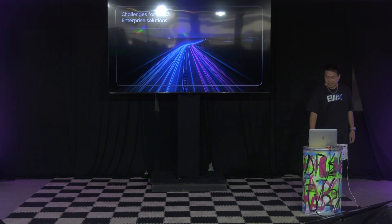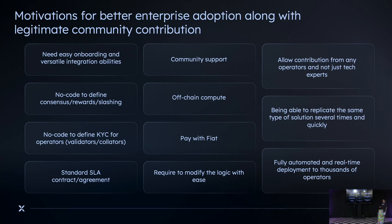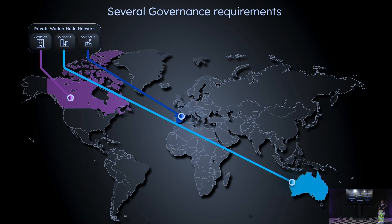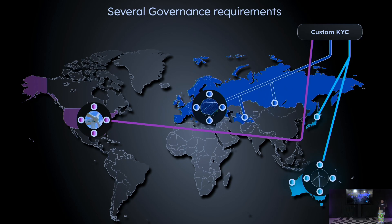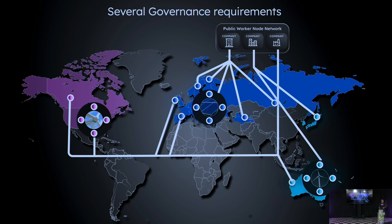Having engaged with enterprises that are familiar and more comfortable with legacy and well-established software solutions, we have identified the challenges for enterprise Web 3.0 solutions adoption. These challenges include the need for easy onboarding, versatile integration abilities, decentralized off-chain computing abilities, fully automated and real-time deployment of enterprise solutions to thousands of operators, and allowing the community to be involved — not just tech experts — as well as fiat payments, standard SLAs, and more.